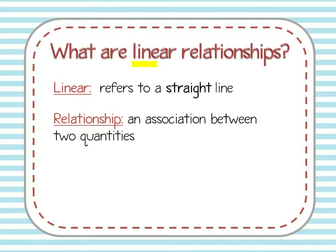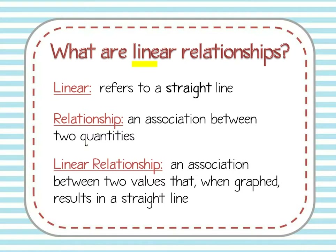So if 'linear' refers to a straight line and a 'relationship' is just an association between two quantities, then a linear relationship is an association between two values or two quantities that, when graphed, results in a straight line. We have two things that are related, we make a graph of them, and if that graph is a straight line, then we can say that the relationship is linear.